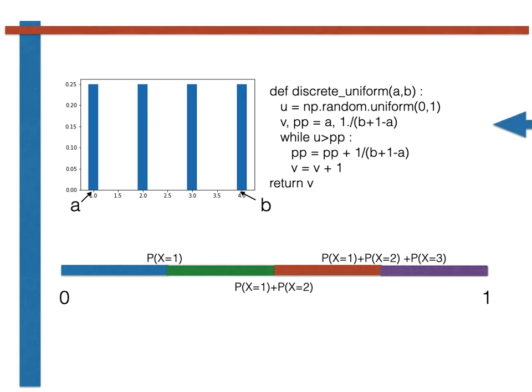We then set pp equal to the probability that the random variable is equal to a, which is 1 divided by b plus 1 minus a.